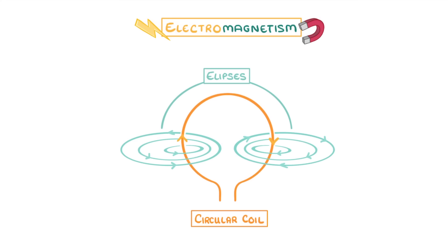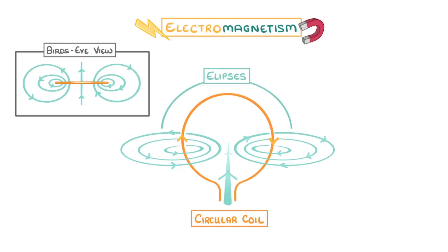And as the magnetic fields combine, they'll form a single magnetic field which runs straight through the centre of the coil, which if we were to look at it from above, would look like this.